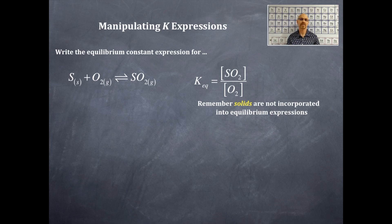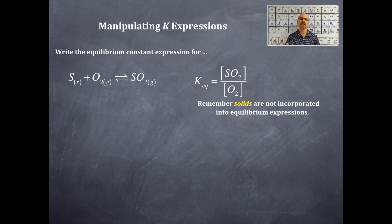Why is sulfur not included? Because solids are not included in any K expression. That means mathematically, if you add more solid sulfur or remove the sulfur, it doesn't affect the value of K at all — just as long as you have sulfur present, because the reaction can't go forward without it.